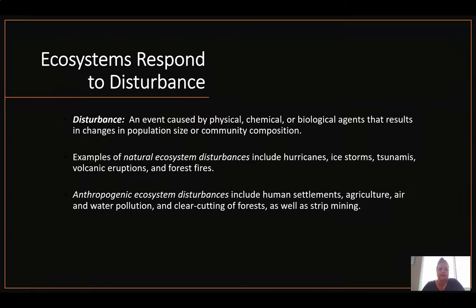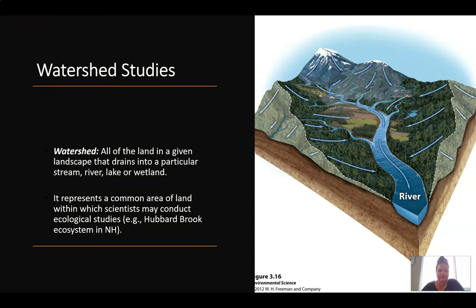Ecosystems respond to disturbance. Disturbance is any event caused by physical, chemical, or biological agents that results in changes in population size or community composition. Examples would be natural ecosystem disturbances like hurricanes, ice storms, tsunamis, volcanic eruptions, and forest fires. All of those things cause ecosystem disturbances and are natural processes. Then we have things that are not as natural, which we call anthropogenic ecosystem disturbances. These are human settlements, agriculture, air and water pollution, clear cutting of forests, and strip mining. The goal here is for us to produce the least amount of anthropogenic ecosystem disturbances. We don't want to overly disturb ecosystems. You see a lot of people try to do ecosystem restorations. That is because we have disturbed ecosystems so greatly that we now need to fix it.